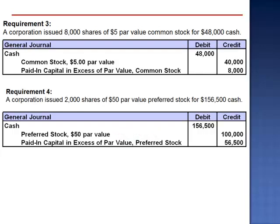So unless a stock is no-par value, no stated value, it will always take two paid-in capital accounts — the stock account and the excess account — to record the issuance of shares. If the stock is no-par, no stated value, then a single account, common stock no-par value, is used.